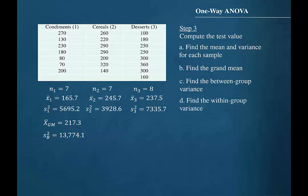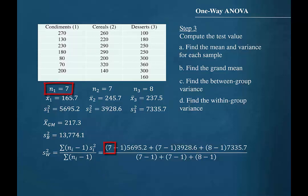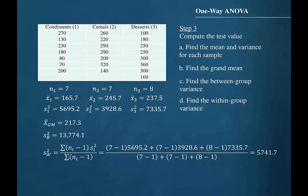Step D is to find the within-group variance. The within-group variance is given the symbol S sub W squared. The within-group variance is found by first finding the sum of the products of one less than each sample size and its respective variance, then dividing that sum by the sum of one less than each sample size. We will begin by multiplying 7 minus 1 by 5695.2, then multiply 7 minus 1 by 3928.6, then multiply 8 minus 1 by 7335.7. Then divide that sum by 7 minus 1 plus 7 minus 1 plus 8 minus 1. The within-group variance is 5741.7.